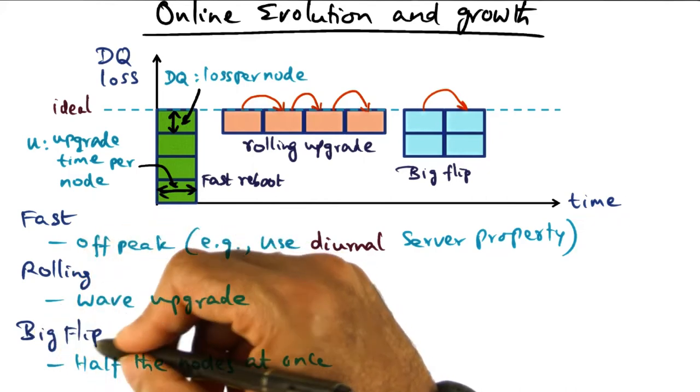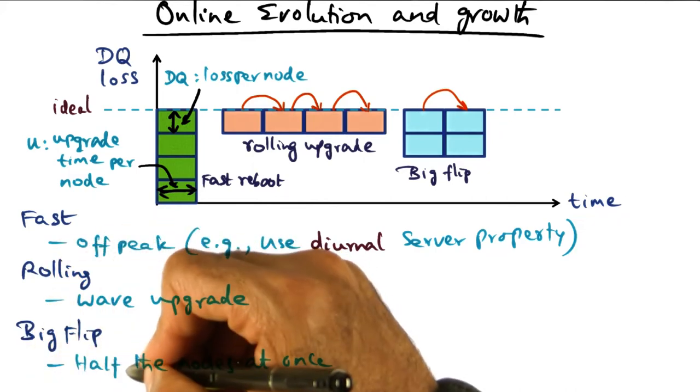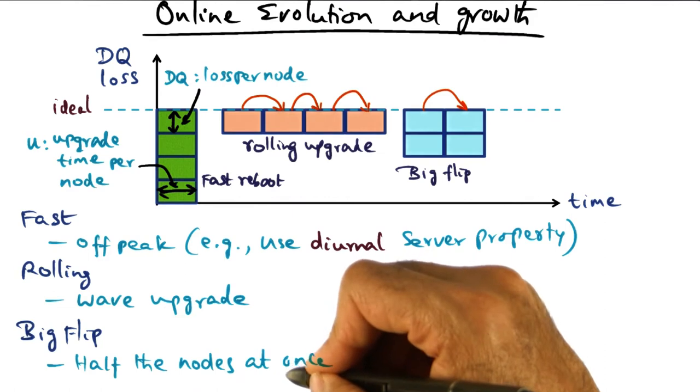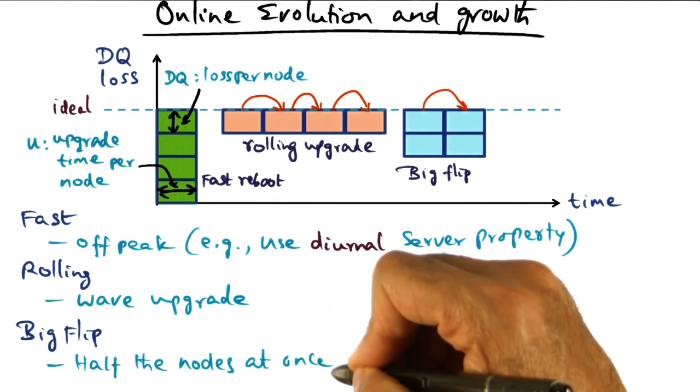A third alternative is what is called a big flip. In the big flip, what we're doing is we're bringing down half the nodes at once.